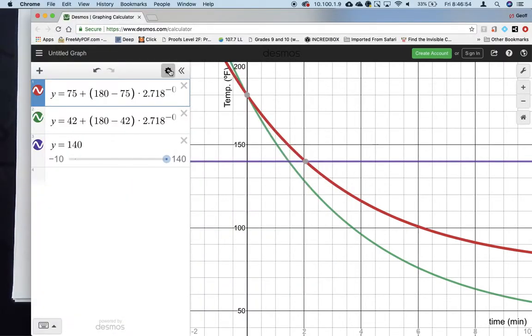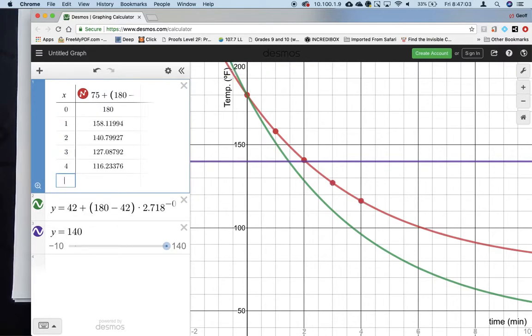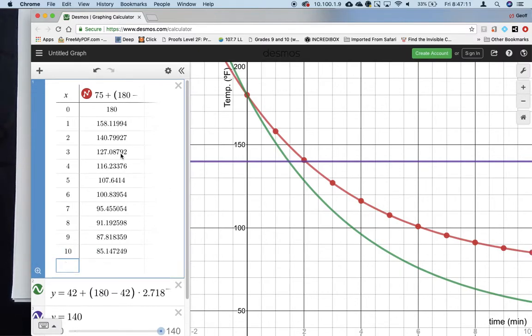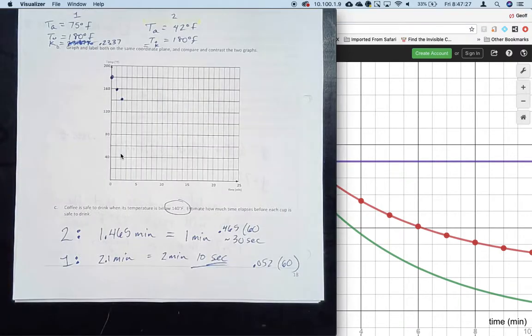We've estimated when the coffee is safe to drink. Here we have the graph. If I click on the gear and click on table, I get some points. We should choose - I mean, negatives, who cares, don't do negatives. Let's do 1, 2, 3, 4, 5, 6, 7, 8, 9, 10, and make sure you plot these points accurately.